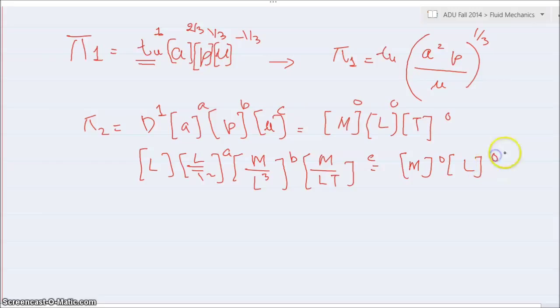So I think you guys are getting a hang of this. What we have to do is just as we have done before again, equate the powers. So for length we have 1 plus a minus 3b minus c is equal to 0.